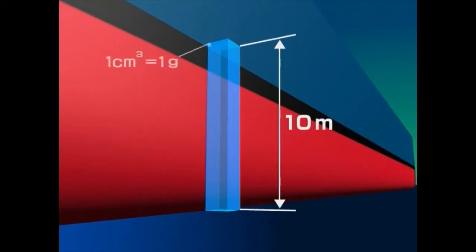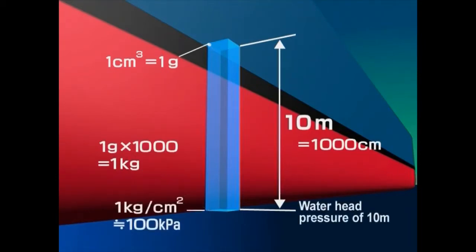As one cubic centimeter of pure water weighs one gram, a 10-meter-tall water column with a basal plane of one square centimeter is equivalent to 1,000 grams or one kilogram. Therefore, the water pressure placed on the basal plane is one kilogram per square centimeter.